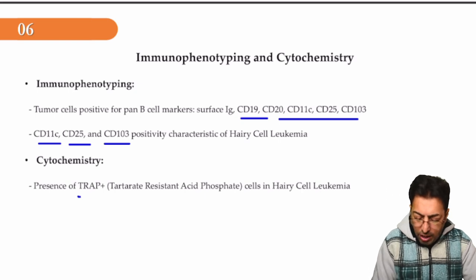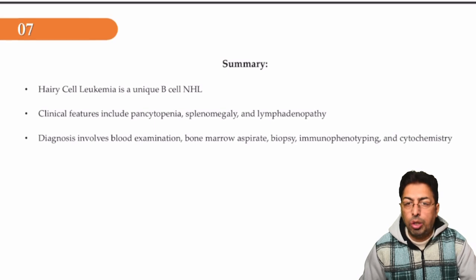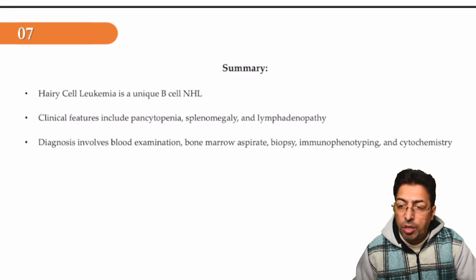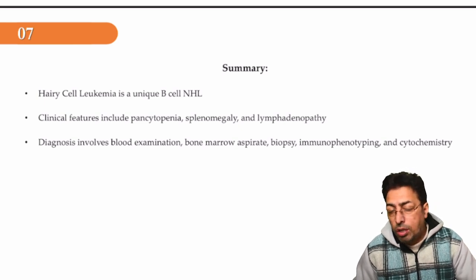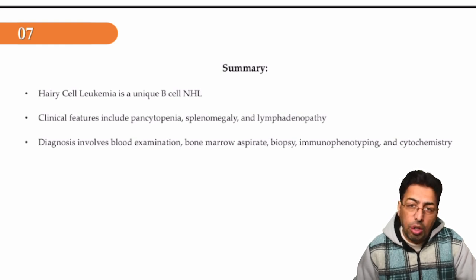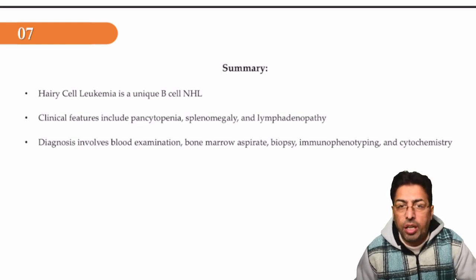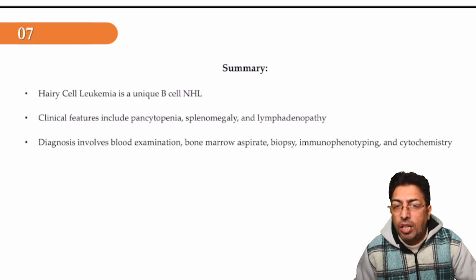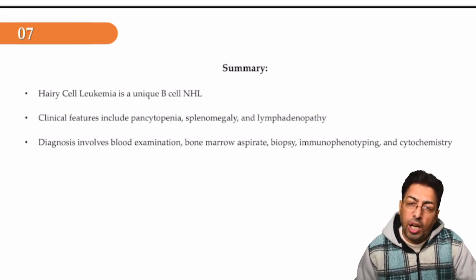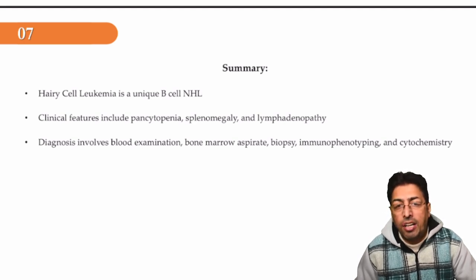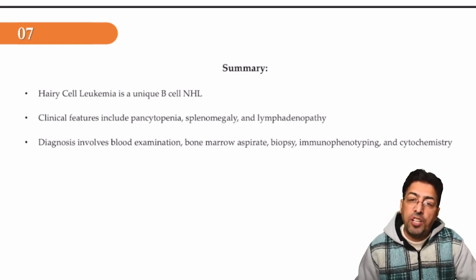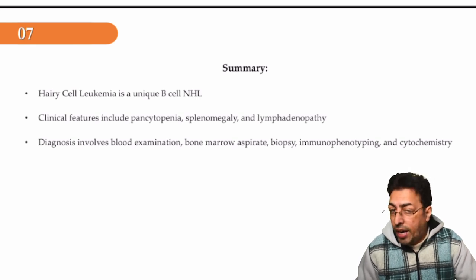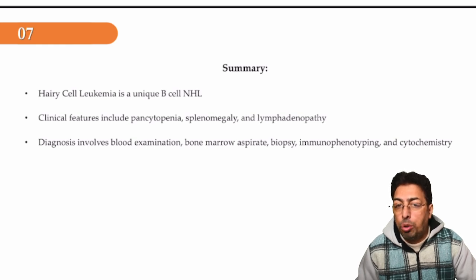To sum up: hairy cell leukemia is a type of lymphoma, not a leukemia. It is rare, a B-cell type of non-Hodgkin's lymphoma, uncommon, indolent. Patients present with recurrent infections, pancytopenia (anemia, leukocytopenia, and thrombocytopenia), and the reduced leukocyte count predisposes to recurrent infections. Other features include possible lymph node enlargement, and two drugs — cladribine and pentostatin — are effective in the treatment of hairy cell leukemia. Key hallmarks: fried egg appearance, hairy cells, and TRAP positivity.